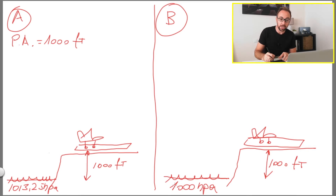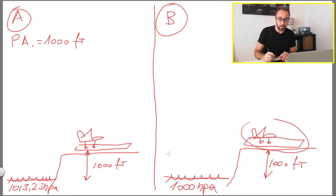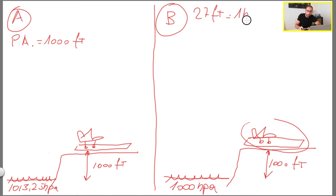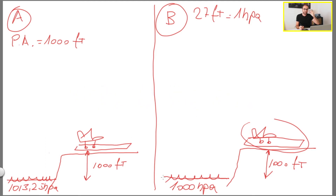In example B we have 1000 hectopascals of QNH. Let's calculate what pressure altitude we have around the aircraft. In the standard atmosphere, for every 27 feet of altitude variation we have 1 hectopascal of pressure variation. So if at mean sea level you have 1013, 27 feet above mean sea level you have 1 hPa less.